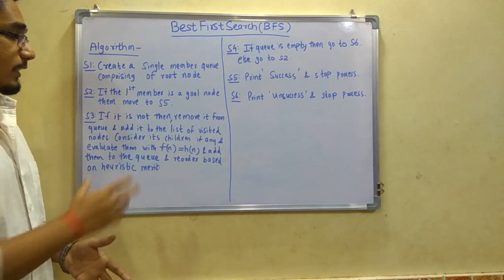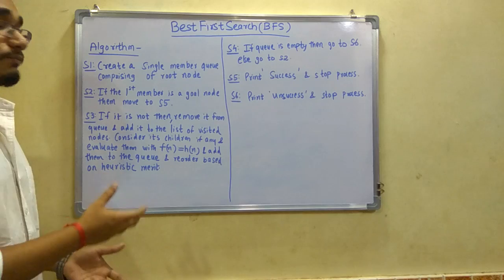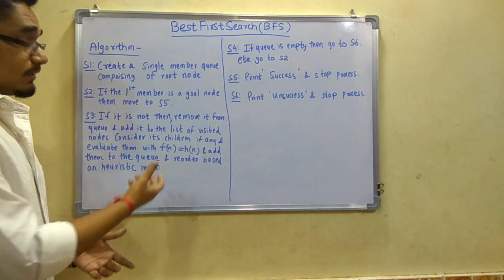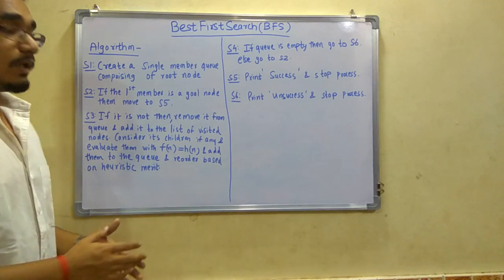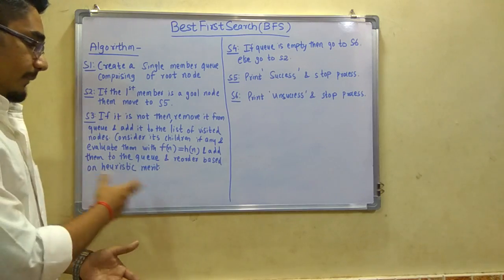Consider its children - if that node has some children then we will evaluate those children with the function f(n) = h(n) and add them to the list of the queue. We will reorder them based on the heuristic merit.